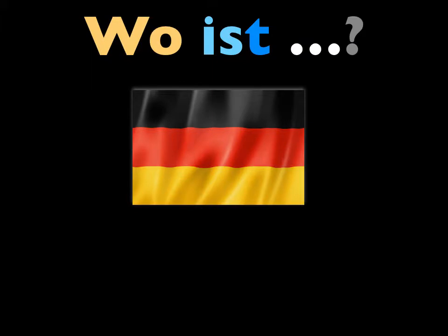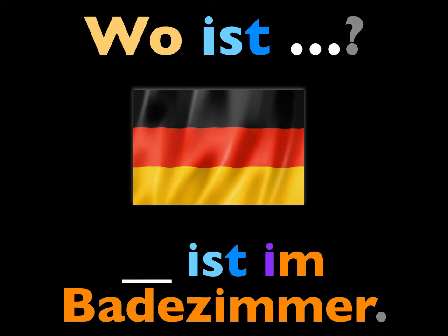Now I'll ask, where is the blank? You'll answer by saying that whatever it is, ist im Badezimmer — it is in the bathroom. You've already learned that the word 'in' takes dative case to show location, and that the words 'der' and 'das' both become 'dem' in the dative case, and that 'in' plus 'dem' can contract to 'im.' Ready? I'll do the first one.